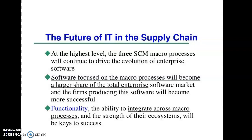For example, three companies are SAP, Oracle, and Microsoft, but in real time many companies are involved in developing SCM software from smaller to higher levels. Software companies are also exploring the possibility of using the emerging trend of blockchain technology in supply chain management systems. Functionality, the ability to integrate across macro processes, and the strength of their ecosystems will be key to success.